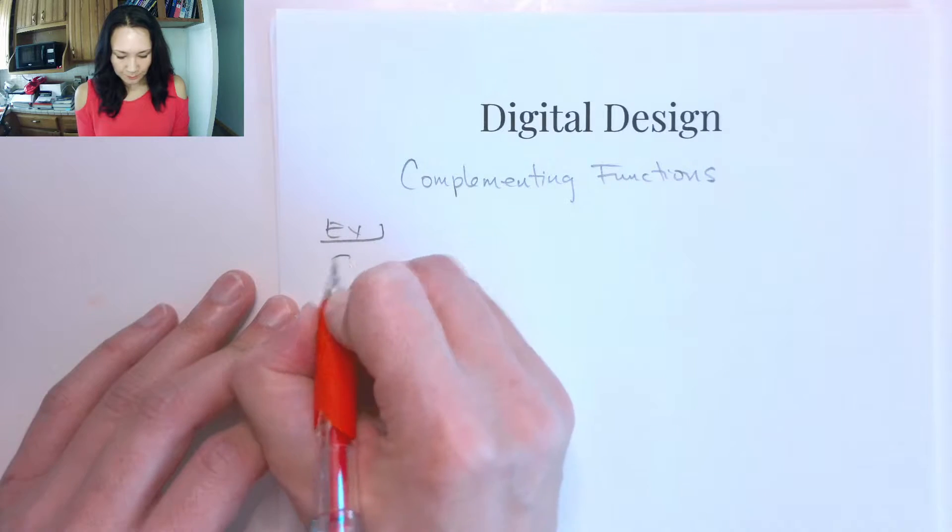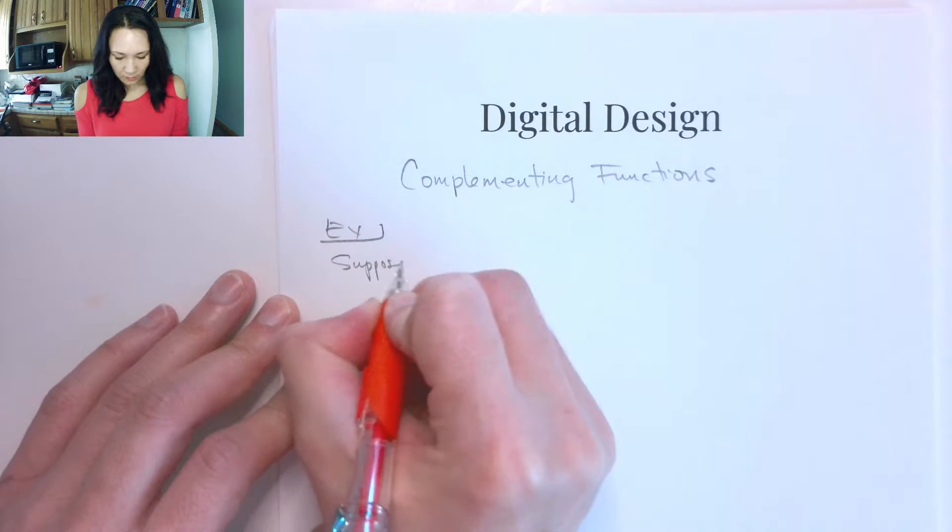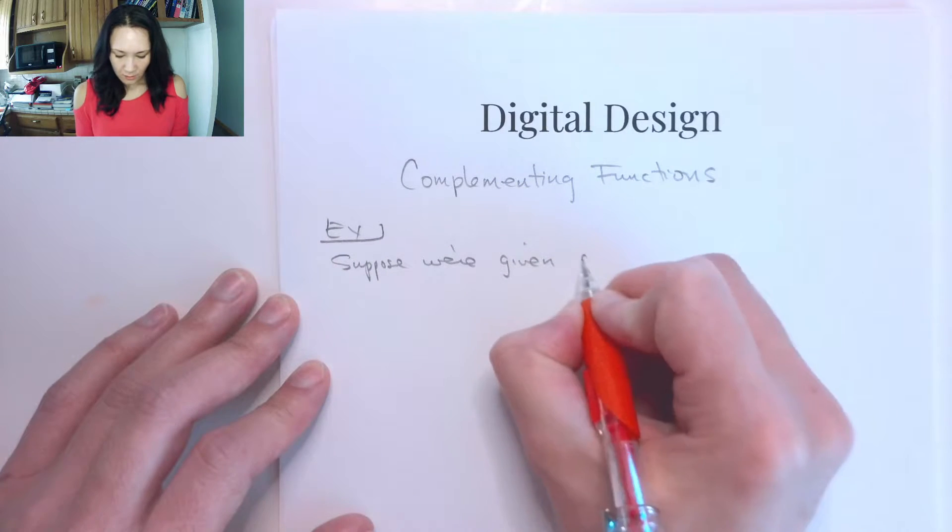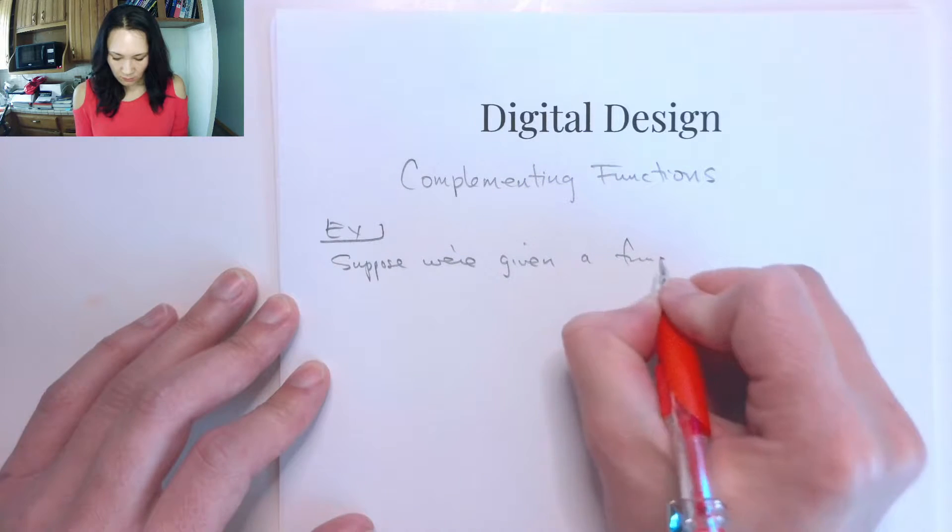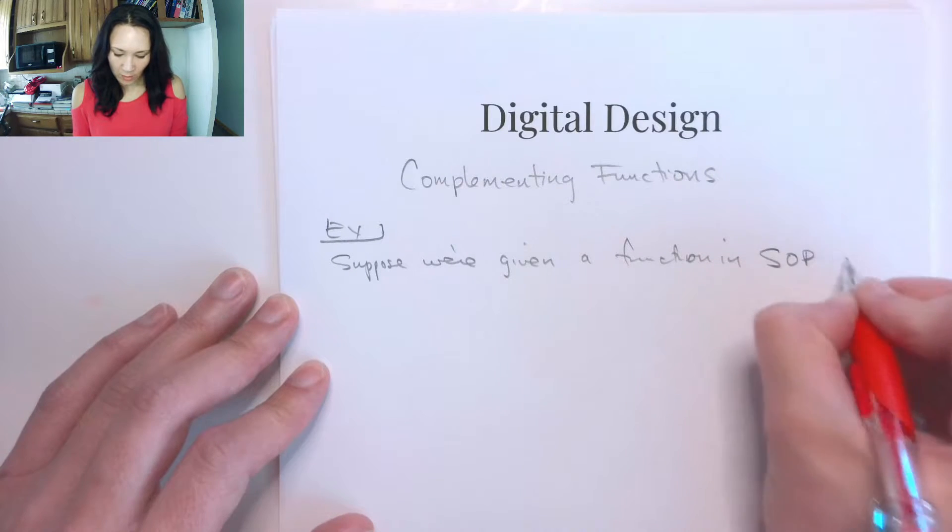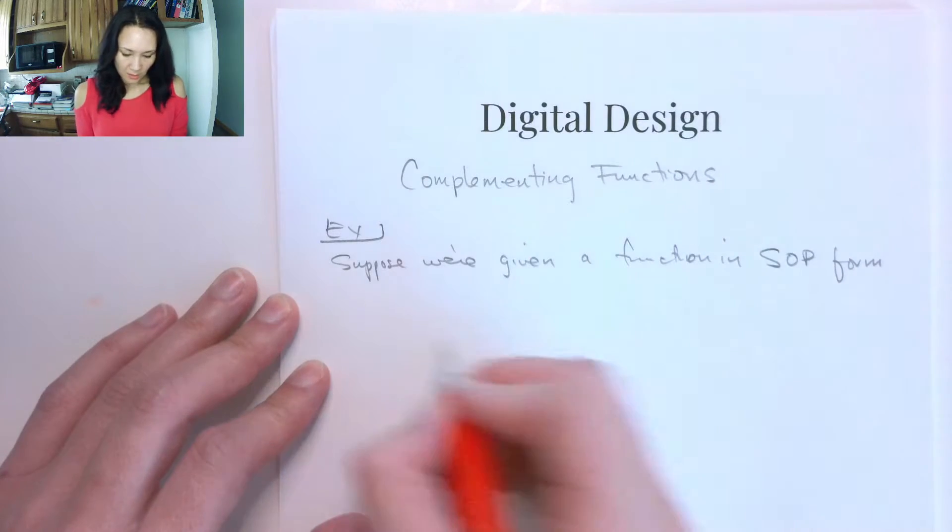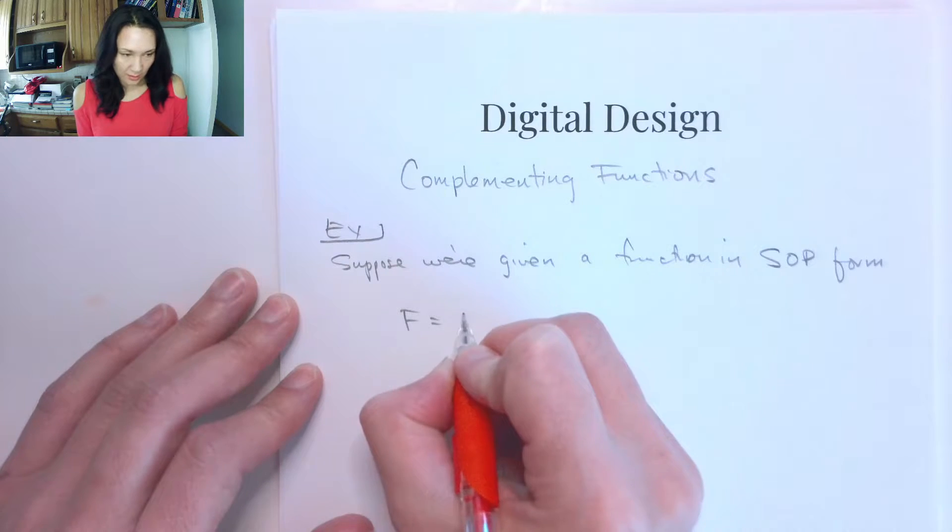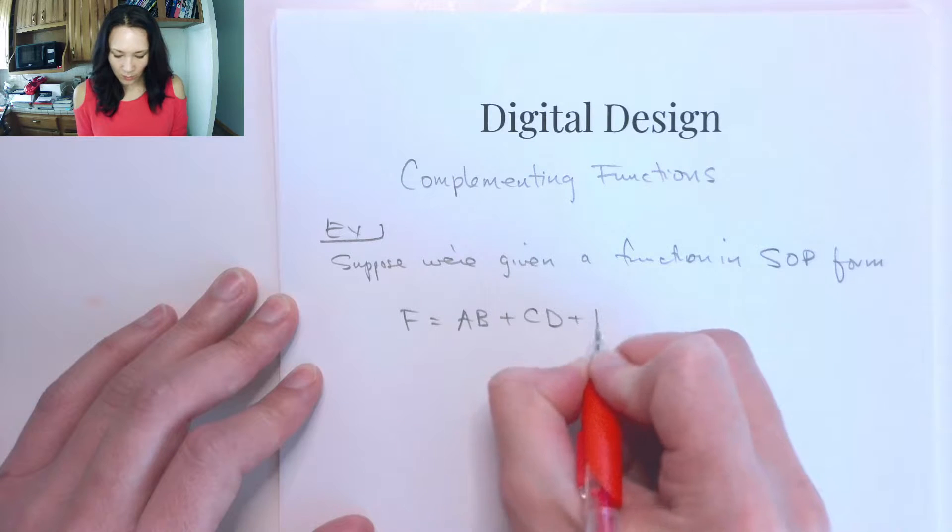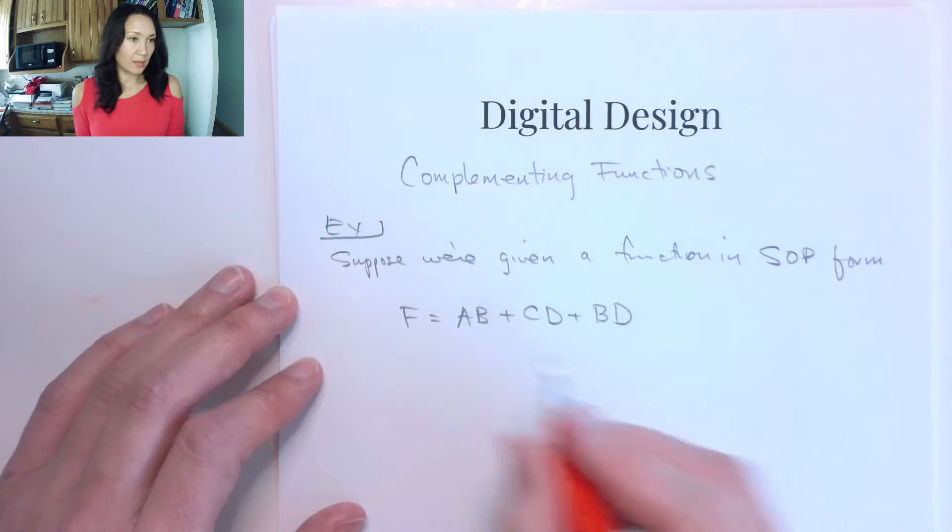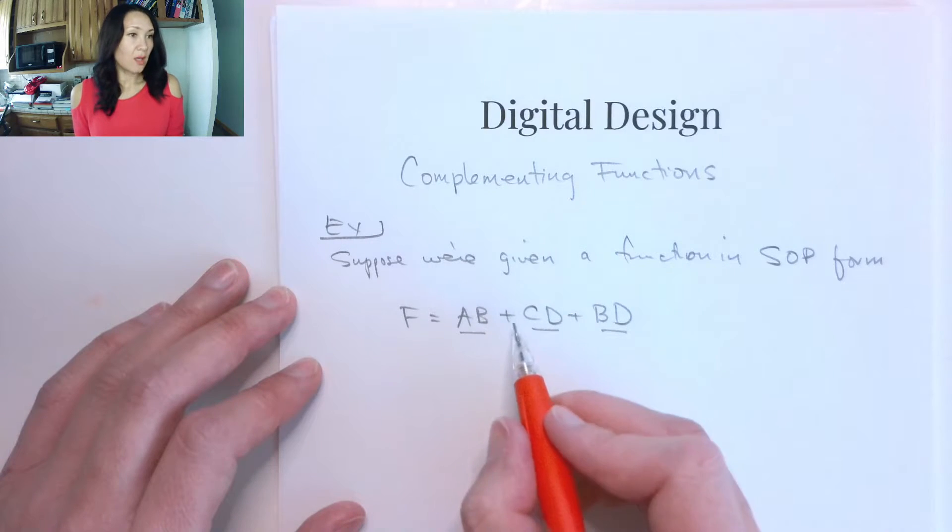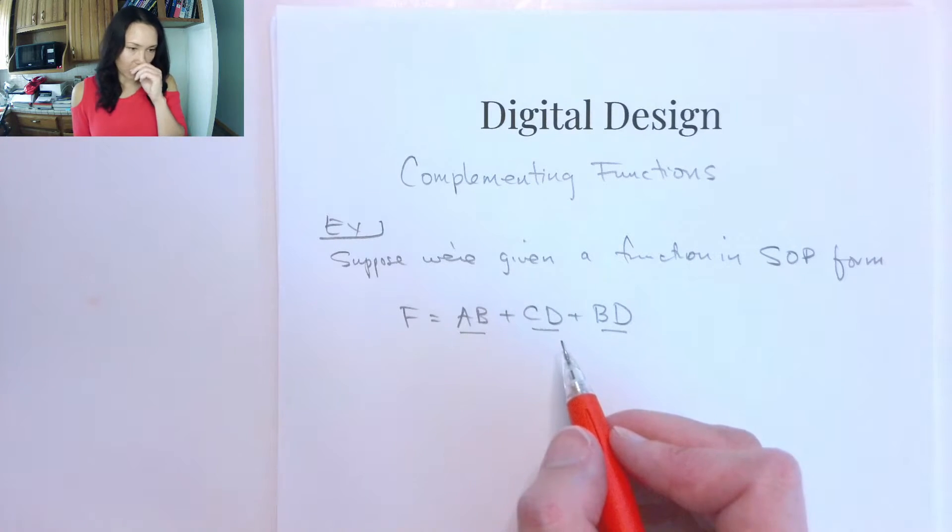Suppose we are given a function in sum of products form. So let's say our function is AB or CD or BD. So we have products AB, CD, and BD getting OR'd together. So this is sum of products form.